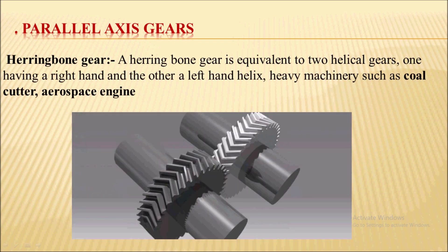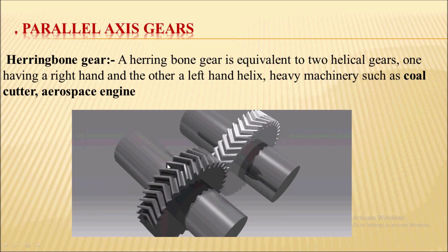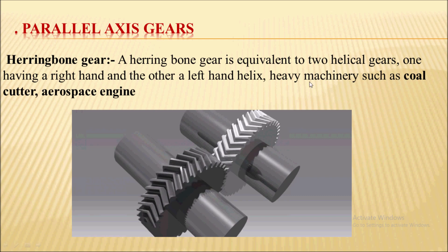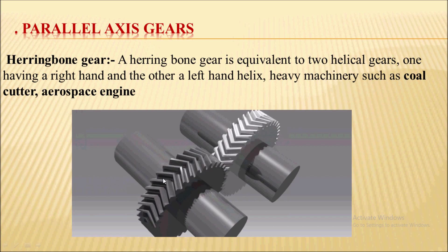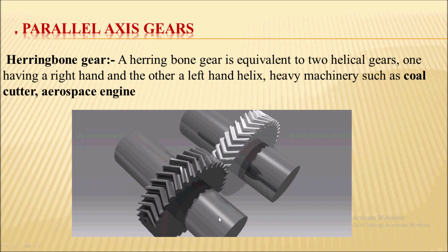The next gear is the herringbone gear, also called the double helical gear. Helical gears create axial thrust or load onto the shaft and bearing. To avoid this, we use the herringbone gear. Herringbone gears are equivalent to two helical gears — one having right hand and the other having left hand — mounted on the same shaft and separated by some distance.